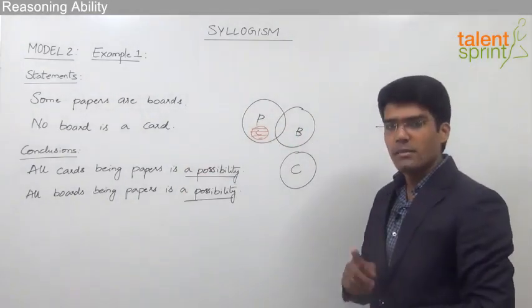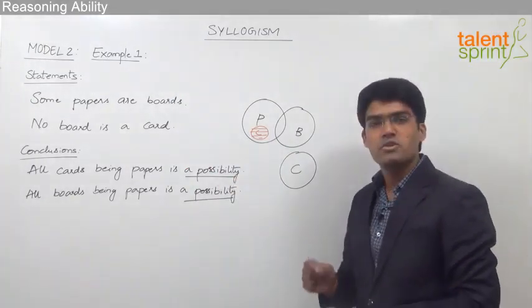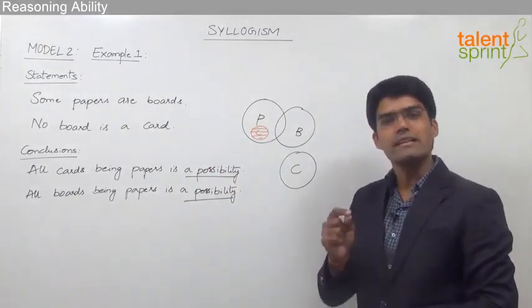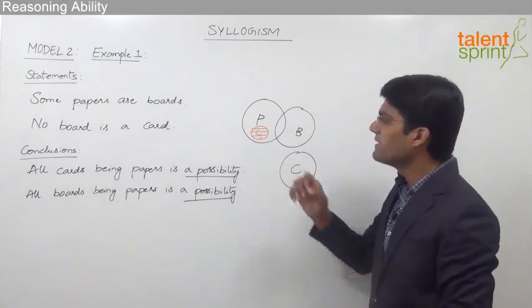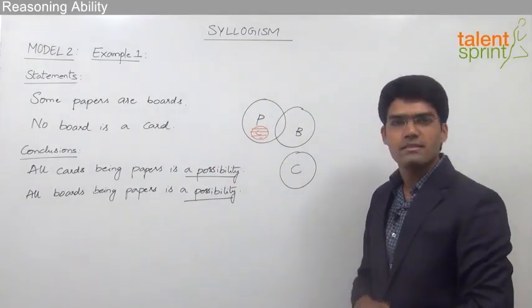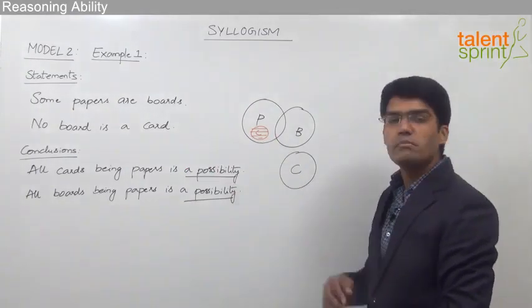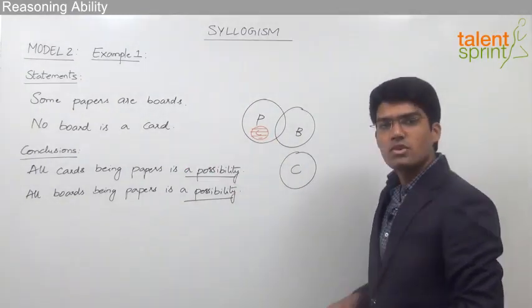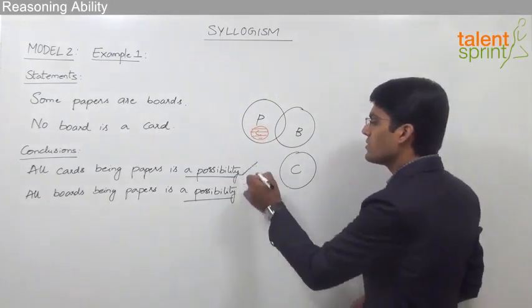A possibility is something which should be true in at least one of the diagrams, and here with this red cards diagram we can show that all cards can be papers. So conclusion number one is true.